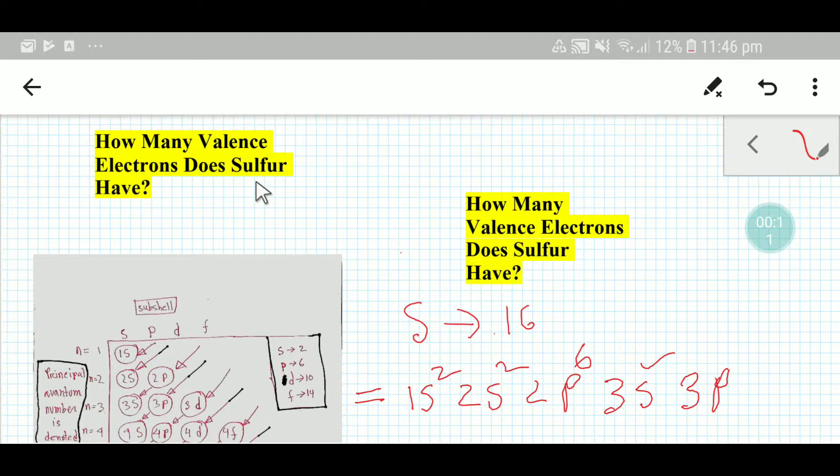To find out the valence electrons of sulfur, we will look at the periodic table. From the periodic table, we see that the symbol for sulfur is S and its atomic number is 16.